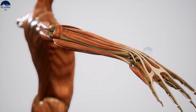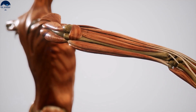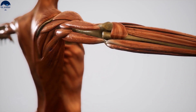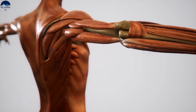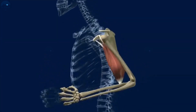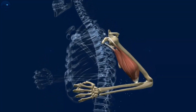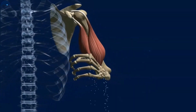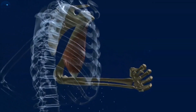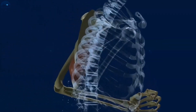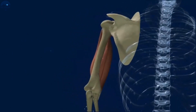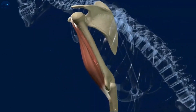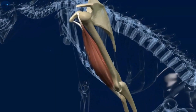In the human body, one bone is connected to the other with the help of joints for the free movement of the body. Joints are the places where two or more bones meet. Muscles are attached to the bones and the joints, which allow movement. Different types of joints allow different types of movement.